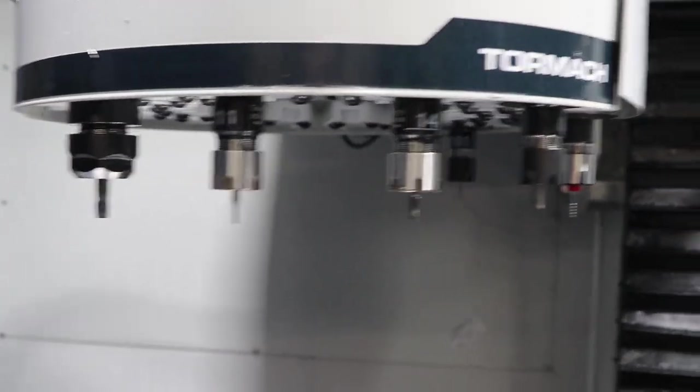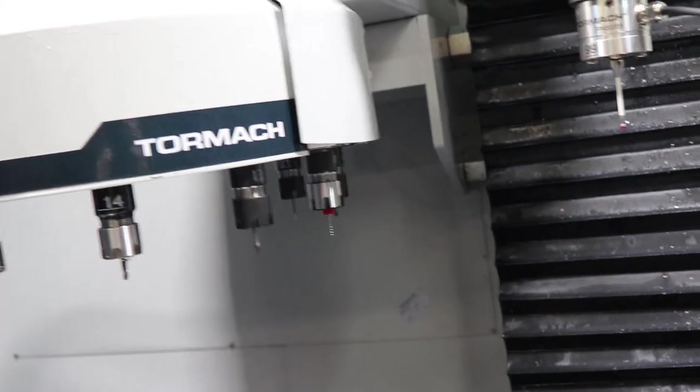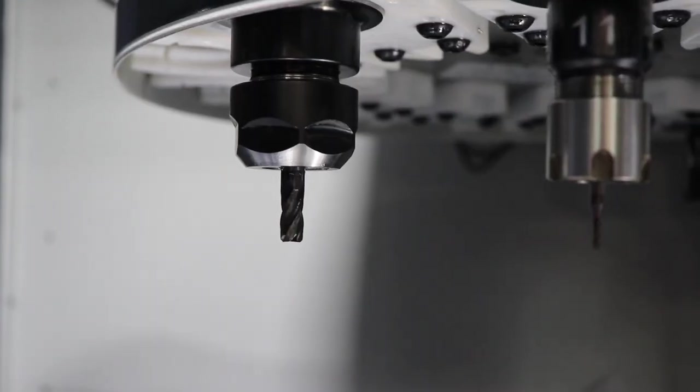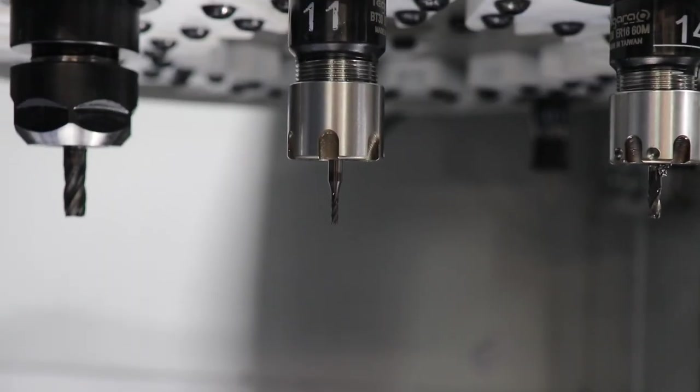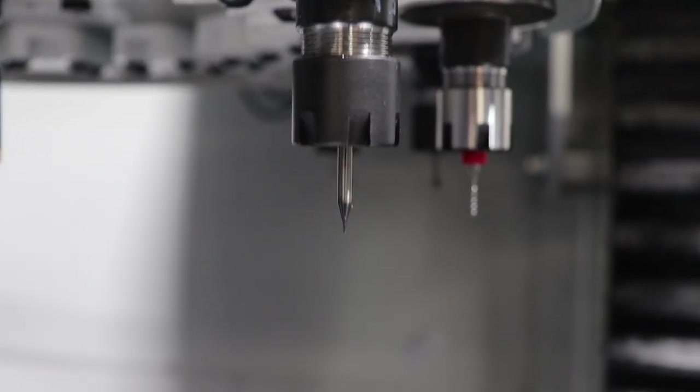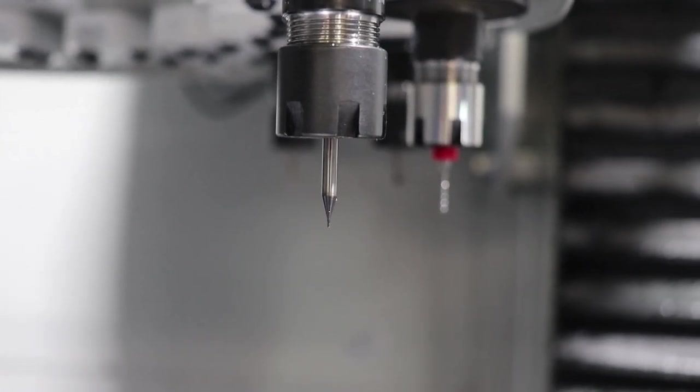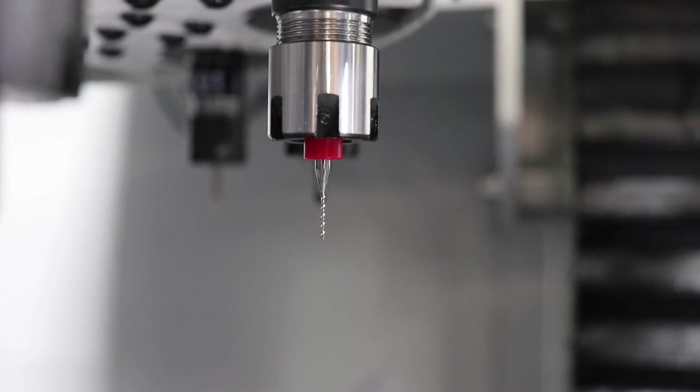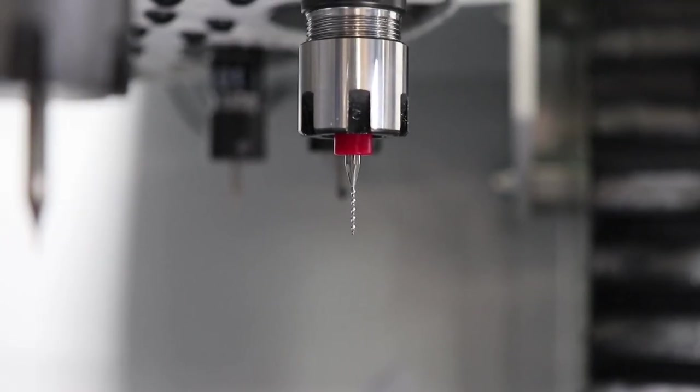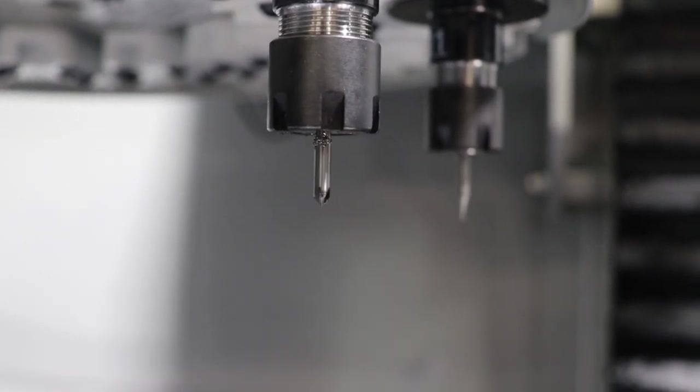All right, tools we're using for this job. There's actually quite a few, one two three four five six seven different tools. Four flute quarter inch, four flute one sixteenth inch, three flute one eighth inch. This is where they get really really small. This is a twenty thousandth diameter two flute carbide drill. This is a thirty thousandth diameter. A one eighth inch 90 degree chamfering end mill.